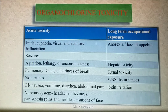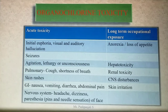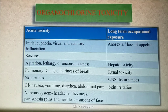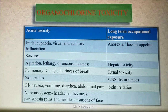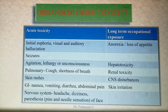Organochlorine toxicity: The toxicity of organochlorine pesticides varies according to their molecular size, volatility, and effects on the central nervous system. The primary clinical effects of acute organochlorine toxicity may present as initial euphoria with auditory or visual hallucinations, seizures, agitation, lethargy, or unconsciousness.